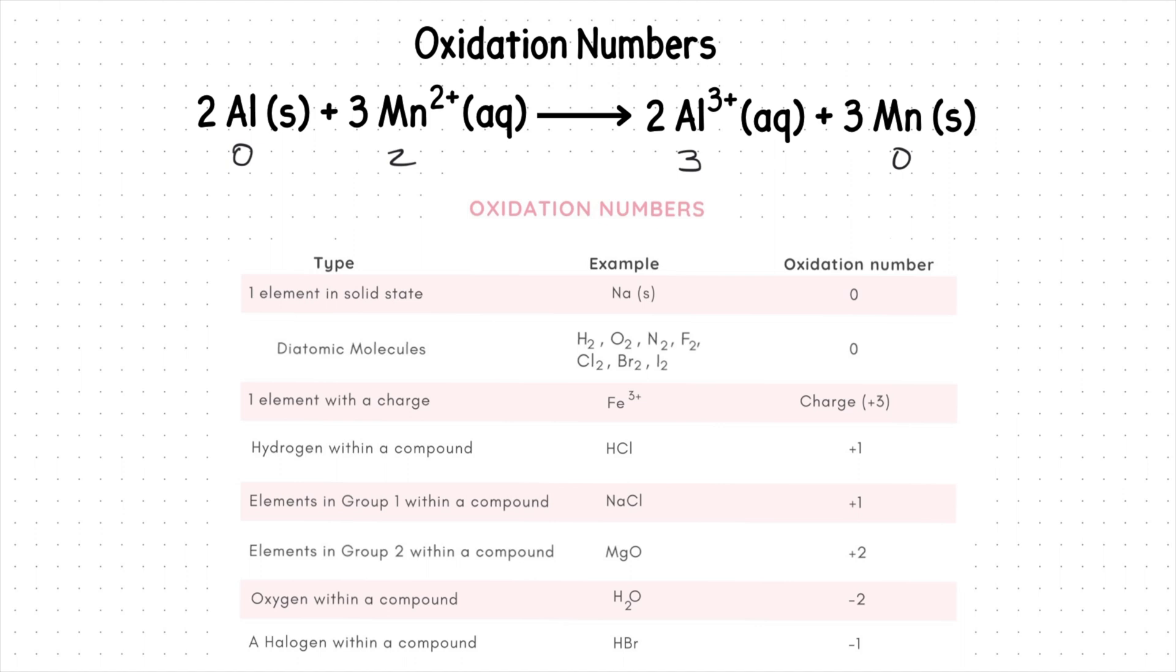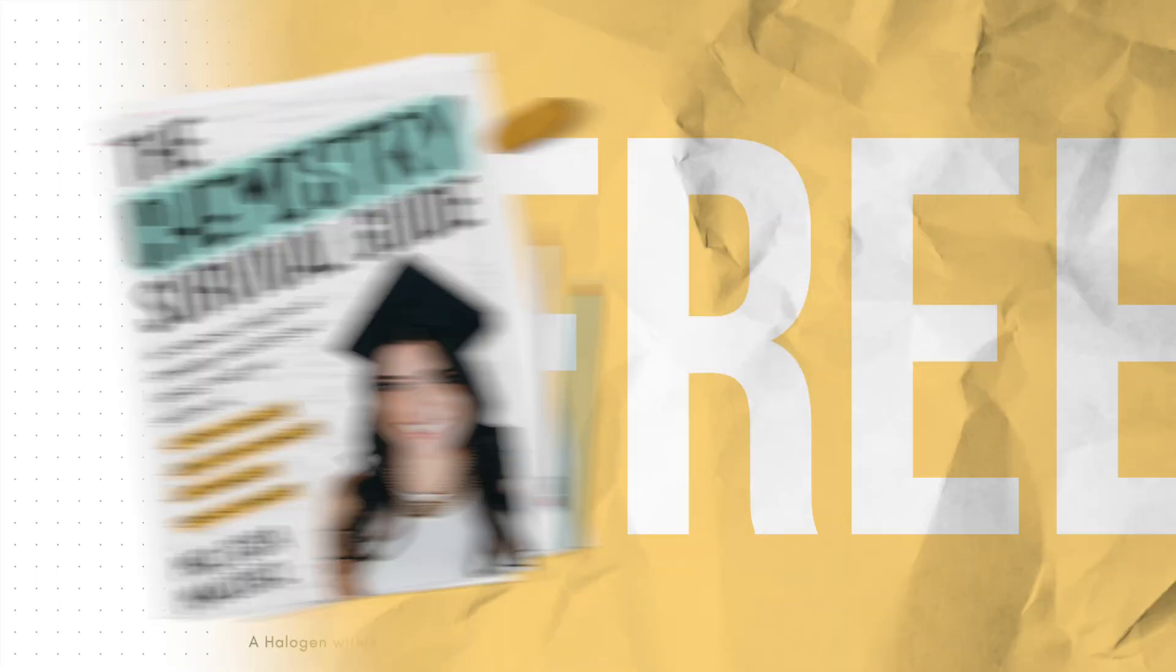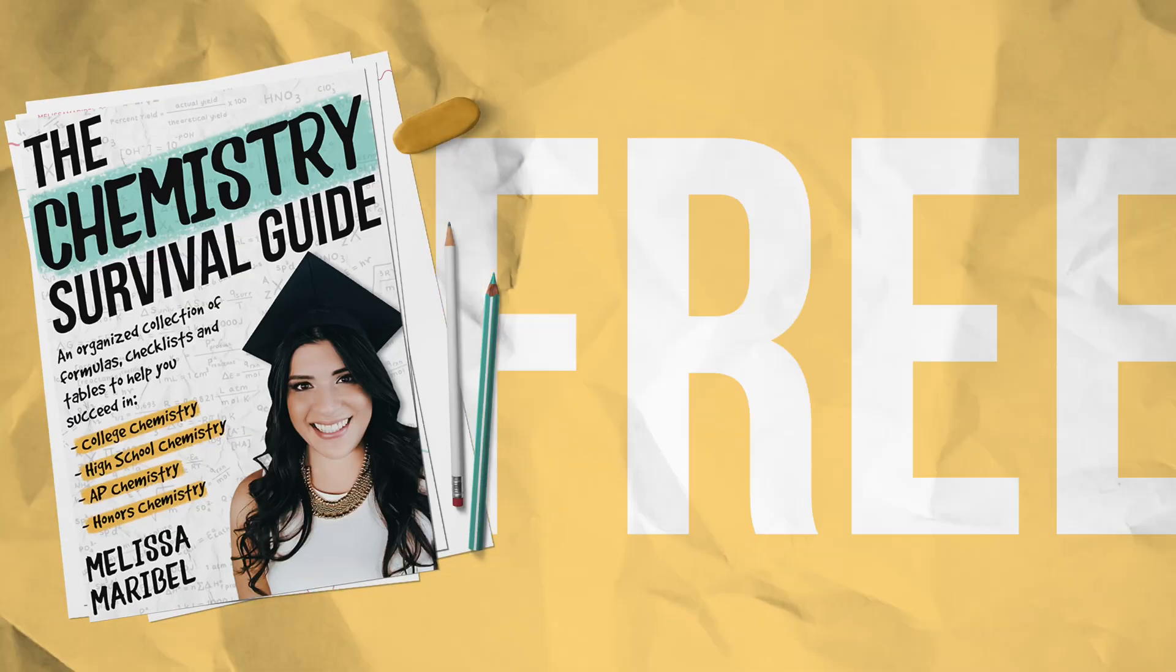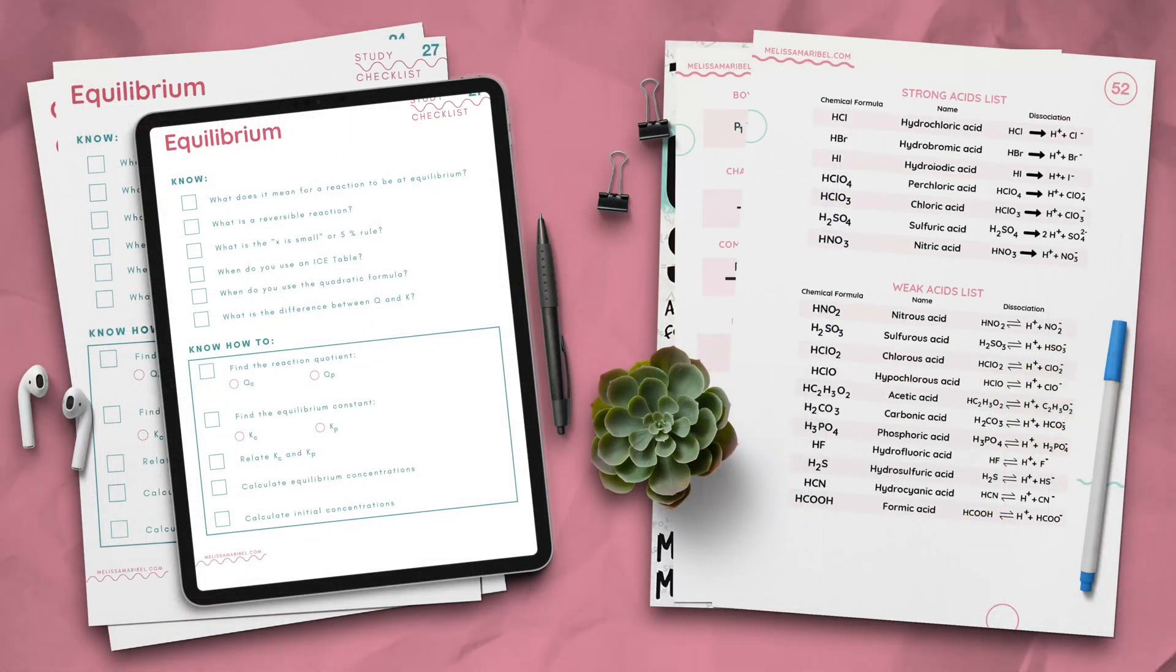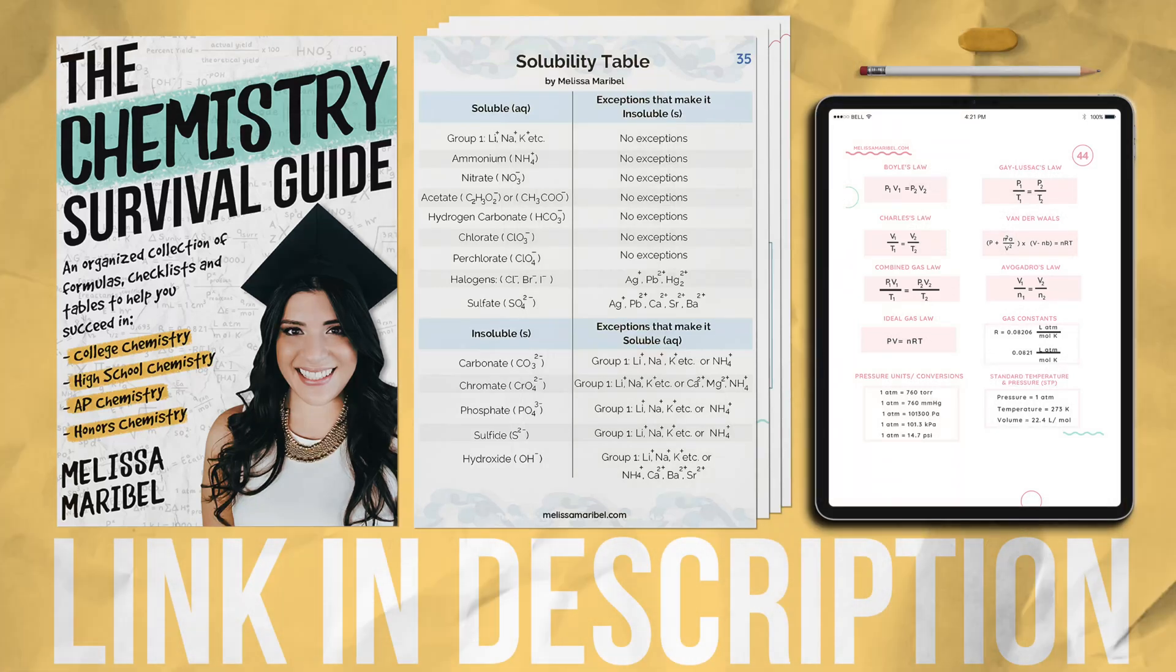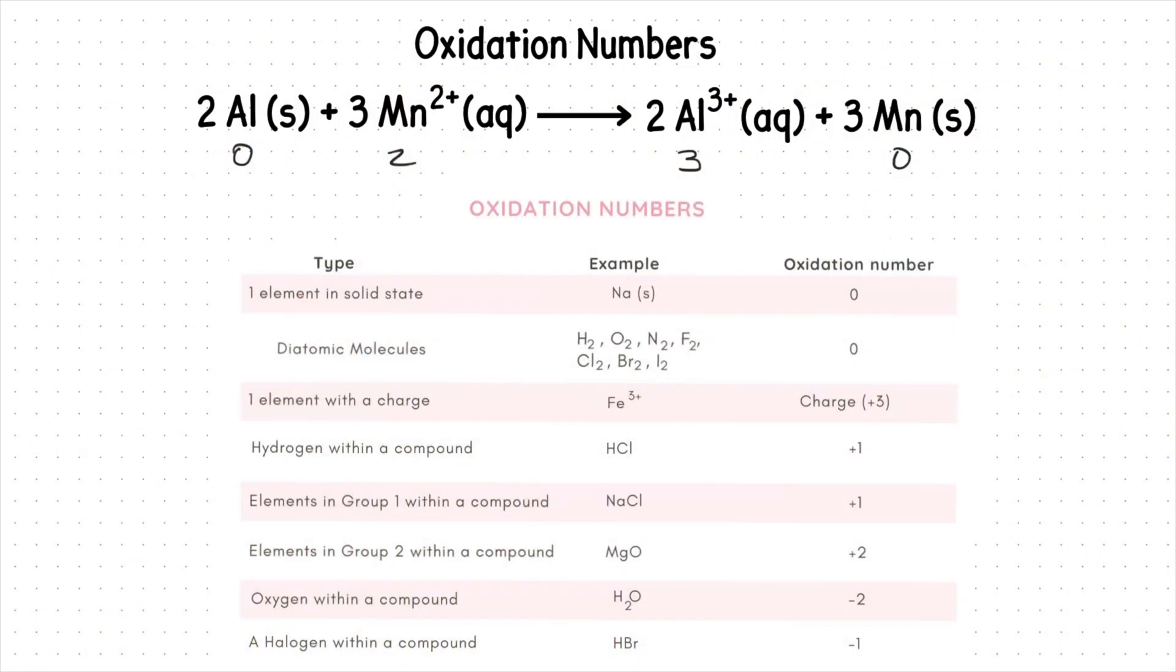Note, all oxidation number rules and formulas used in this video, and all of chemistry, can be found in my free chemistry survival guide. Download that now using the link in the description, so you never have to waste time searching through your book or notes for one formula. Continuing on with this question,